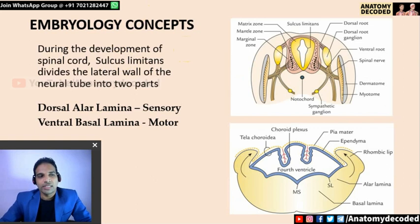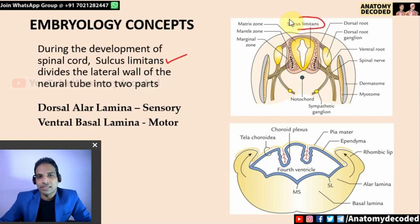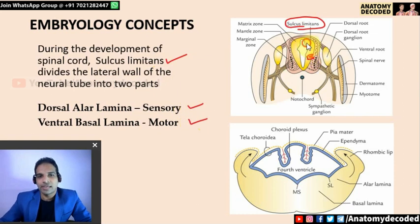Before beginning with the functional components, a little knowledge about the embryology is essential. During the development of the brain and the spinal cord, in the neural tube we can see there is a longitudinal groove which is referred to as sulcus limitans. This divides the lateral wall of the neural tube into a dorsal alar lamina and a ventral basal lamina.